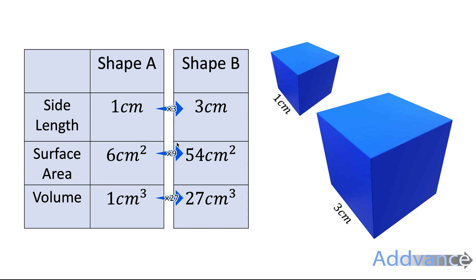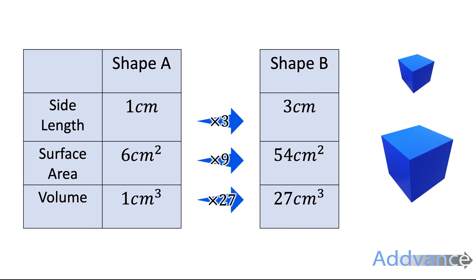You can work out these numbers by dividing the bigger number by the smaller number to get the multiplier. So we times by 3, times by 9, times by 27. Can you see the pattern? 3, 9 and 27 — these are powers of 3. It's 3 to the power 1, 3 squared and 3 to the power 3.